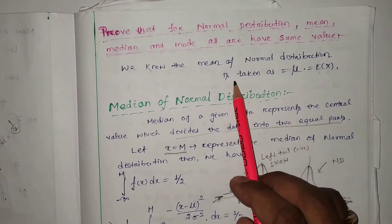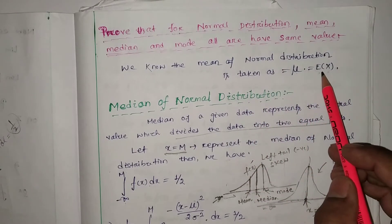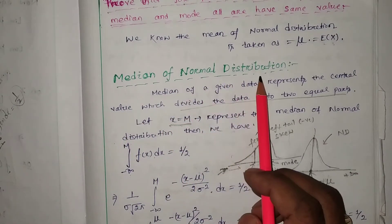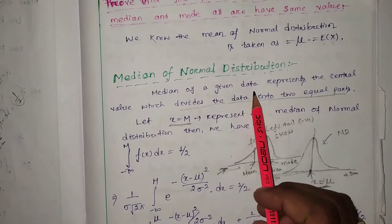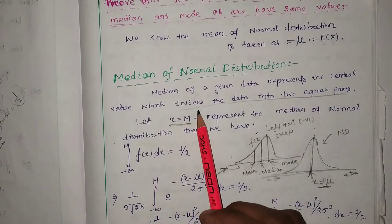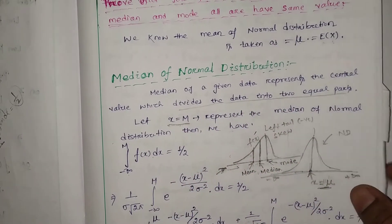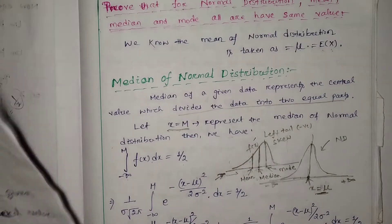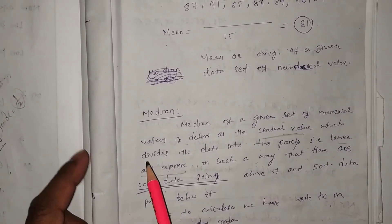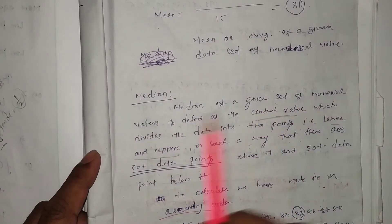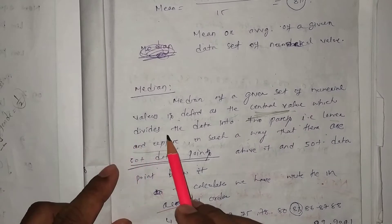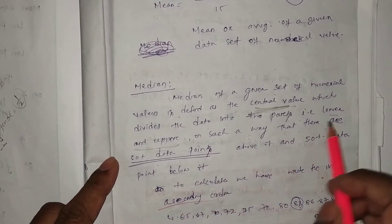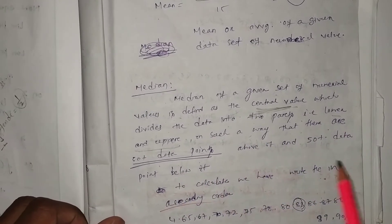We know that the mean of the normal distribution is taken as μ, equal to the expectation of the random variable x. Now we consider the median of the normal distribution. The median of a given data represents the central value which divides the data into two equal parts — lower and upper — such that there are 50% of data points above it and 50% below it.